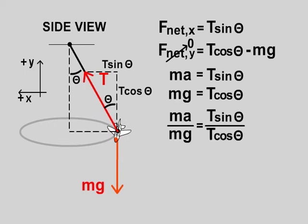The m's will cancel and the T's will cancel. And what we're left with is a over g equal sine theta over cosine theta.